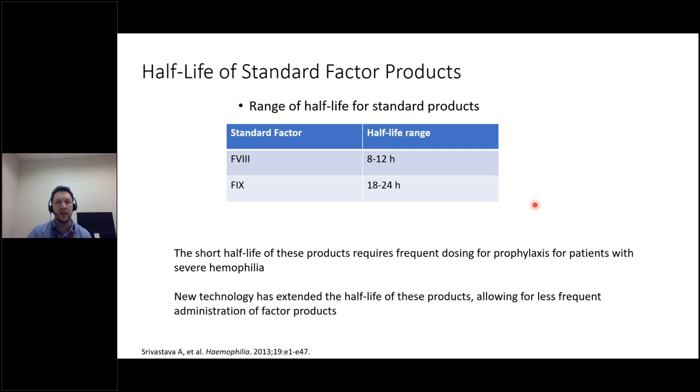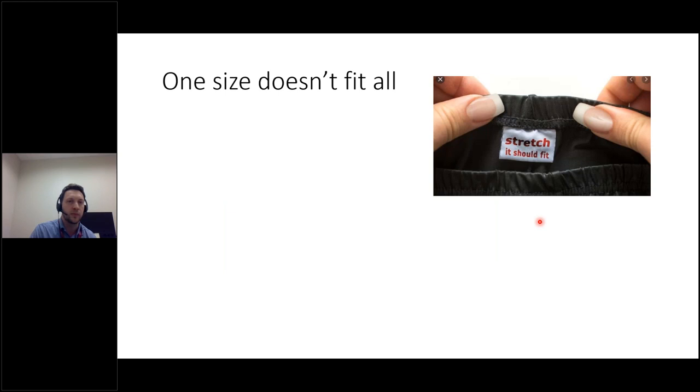How can we achieve this trough level? Well, we have to inject the factor concentrates. And as you know, they have a short half-life. They don't last for long in our body. They get cleared very quickly. And in particular, factor VIII has a much shorter half-life. For factor IX, the story is a bit different because now we have products that have a very long half-life. But unfortunately, for factor VIII, this is not the case yet.